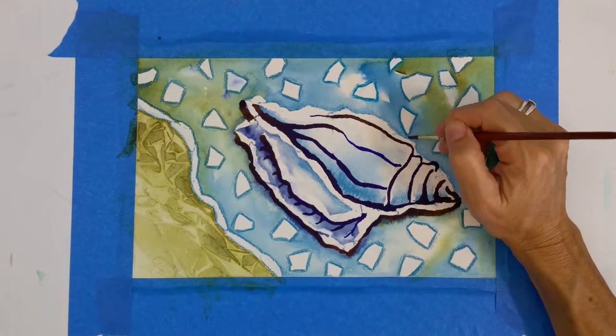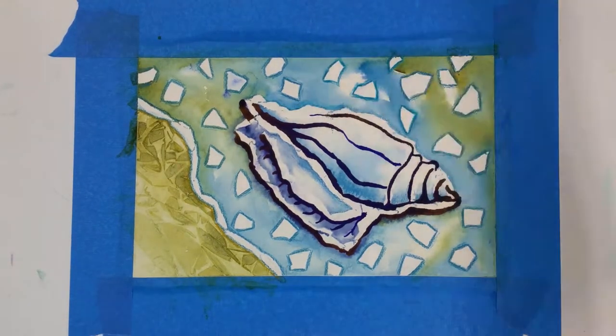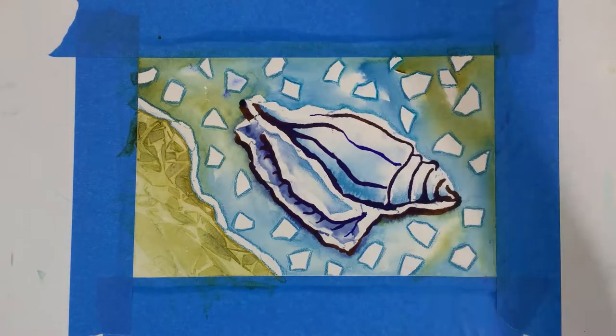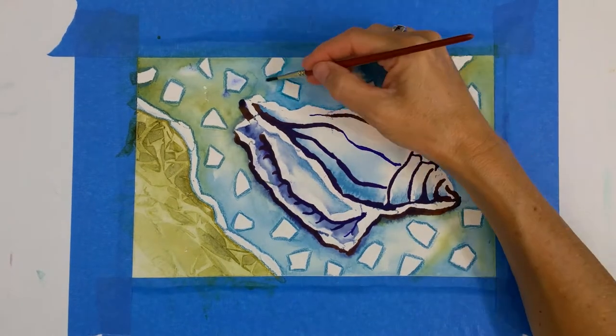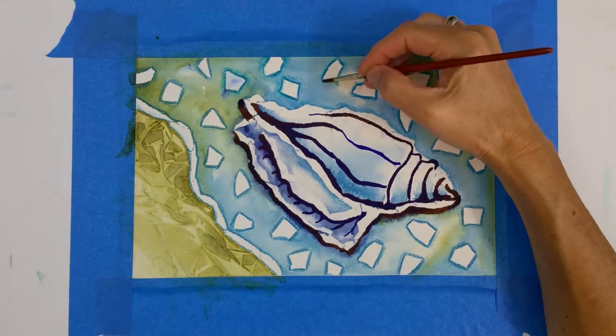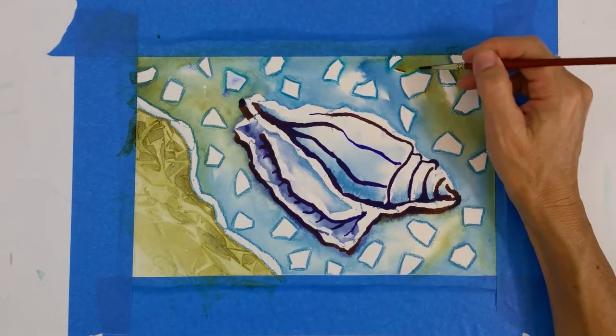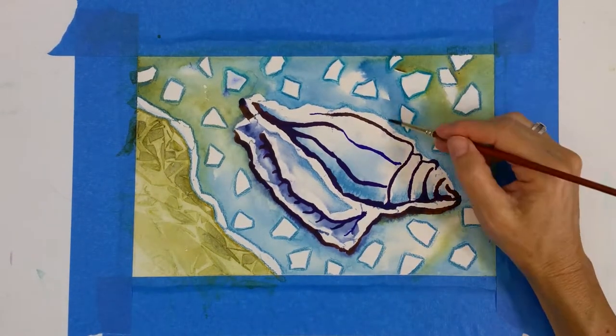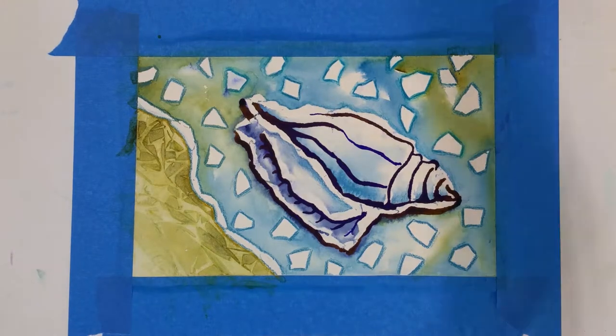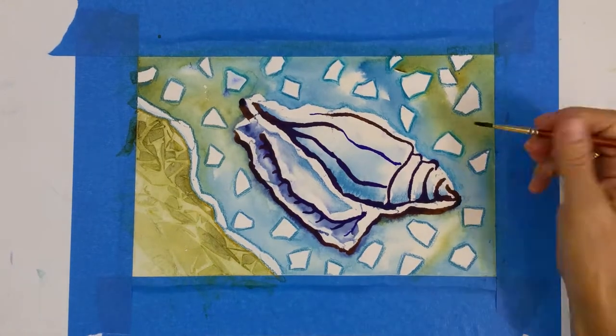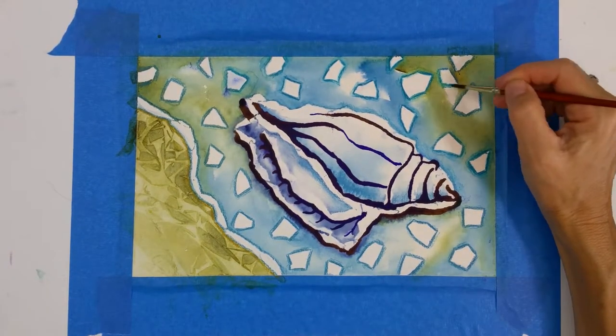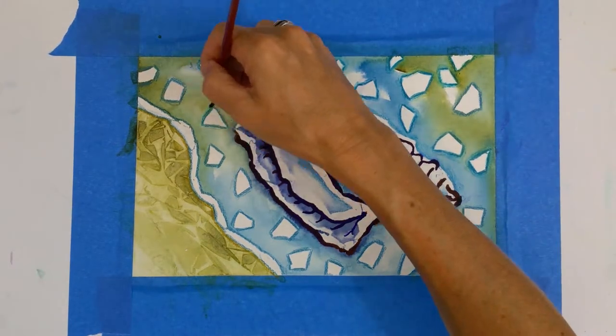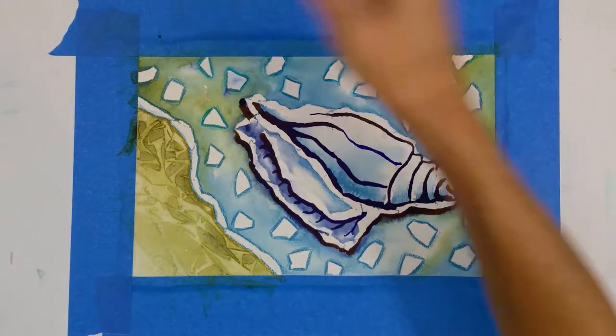And sometimes watercolor can dry a lot lighter than what you had painted and that can get a little bit troublesome sometimes. So it's nice to add a little bit of that watercolor pencil and then soften it with some water. So it still looks like it belongs there, like it's part of your watercolor painting. But it's created some drama and some texture.